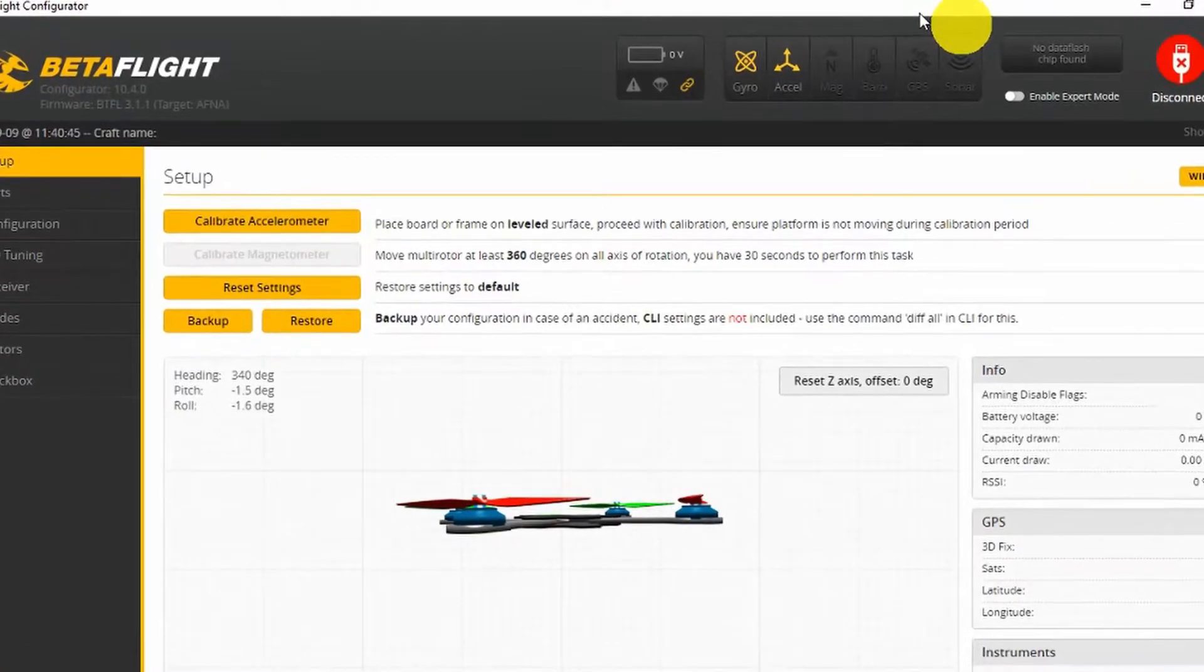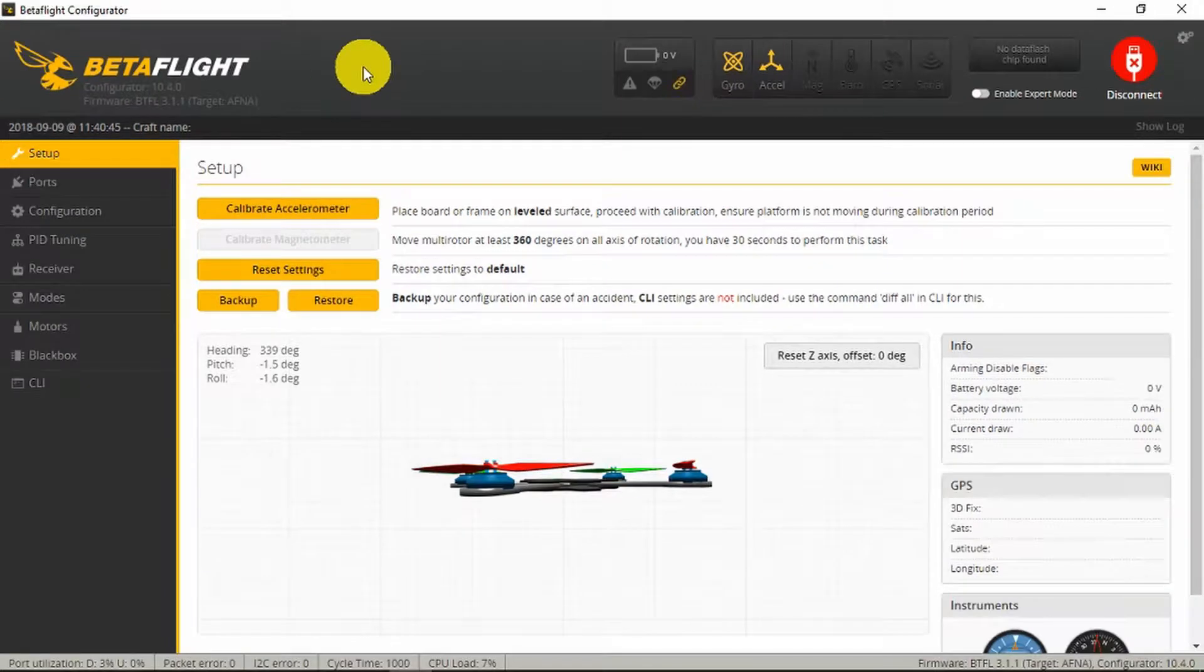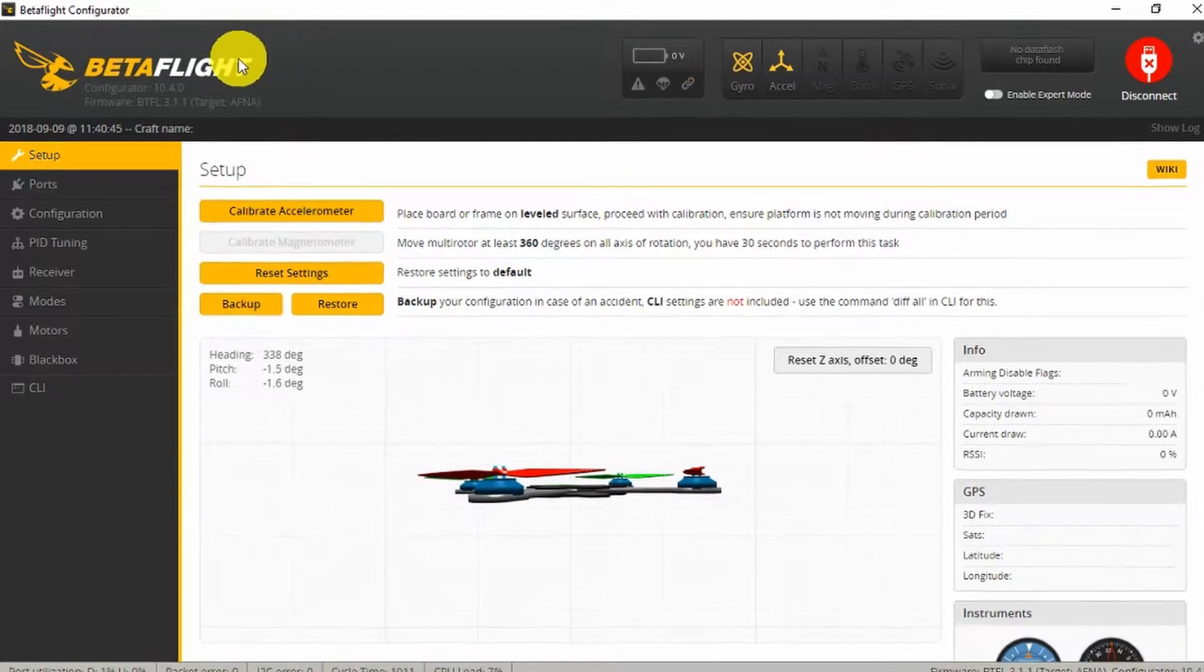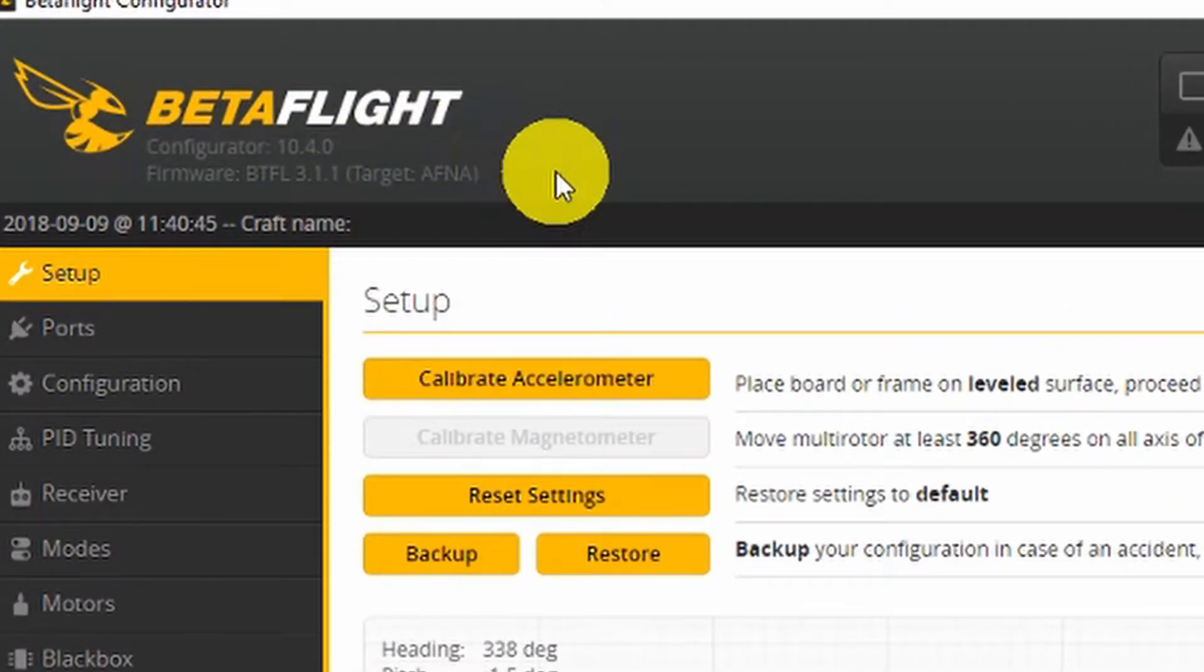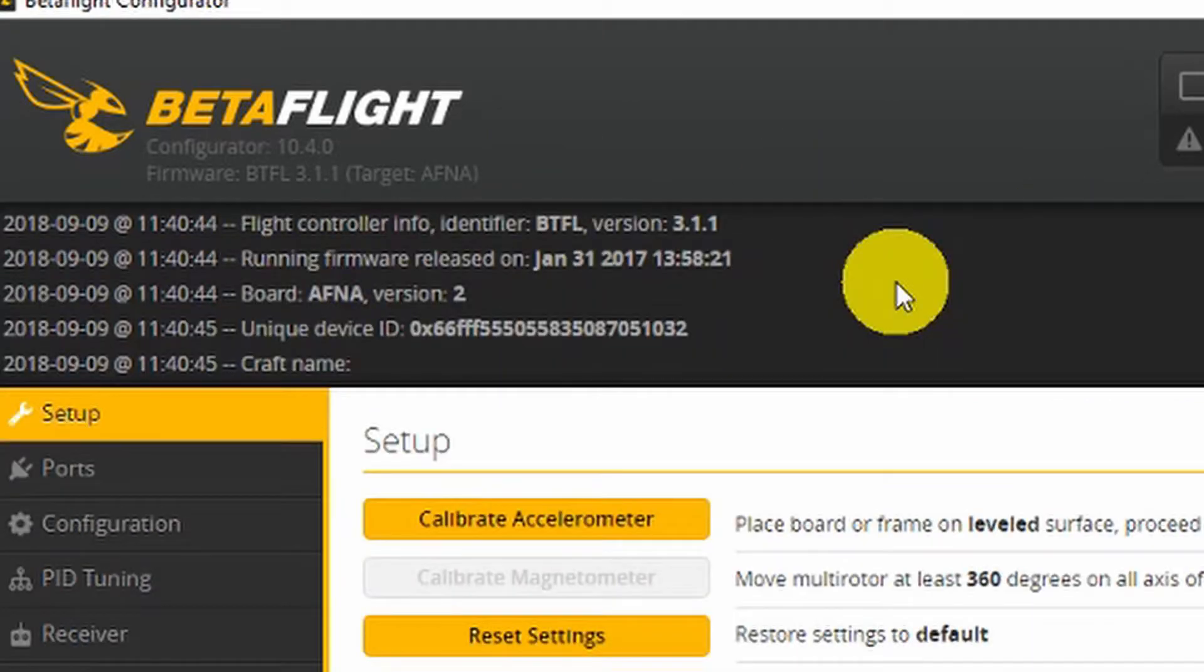Looking at the configurator now, it's worth remembering that people sort of talk generically about Betaflight, but there are two distinct parts to it. This is obviously the Betaflight configurator, and it's difficult to see, but the firmware the flight controller is running is an old firmware 3.1.1.